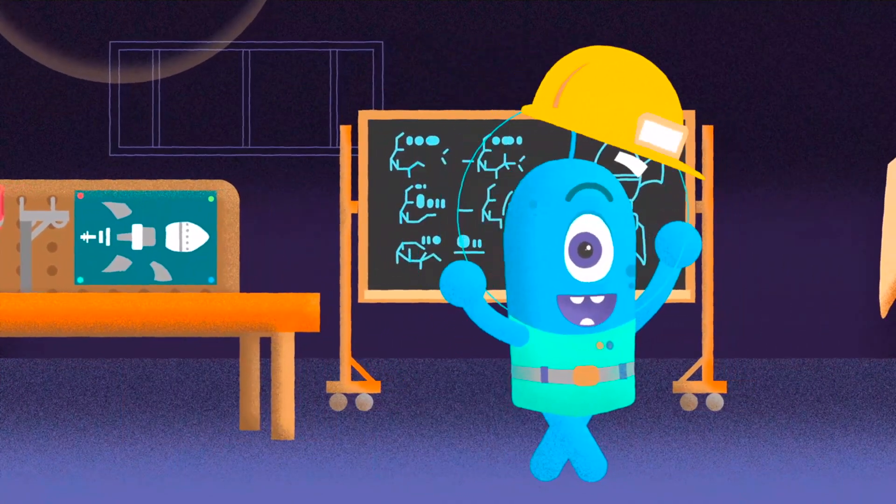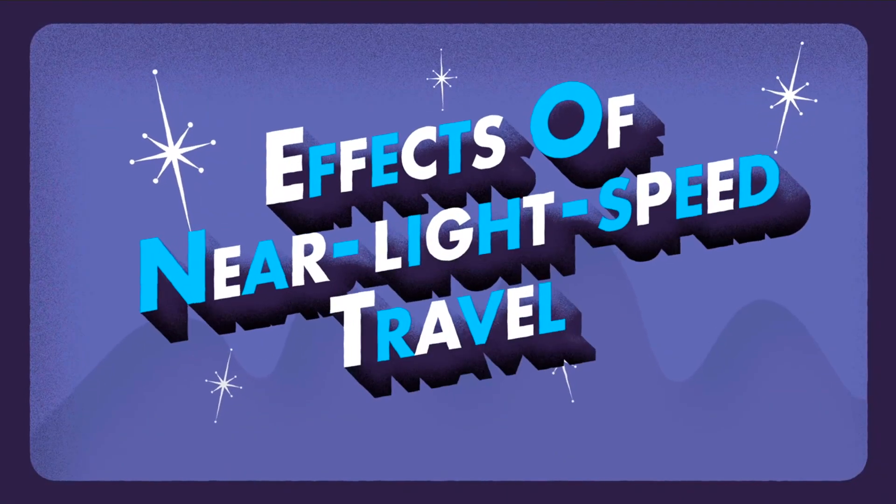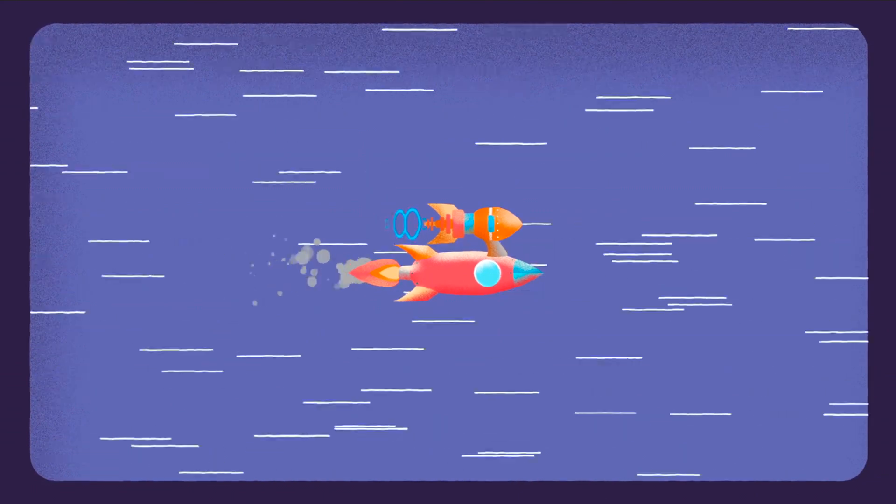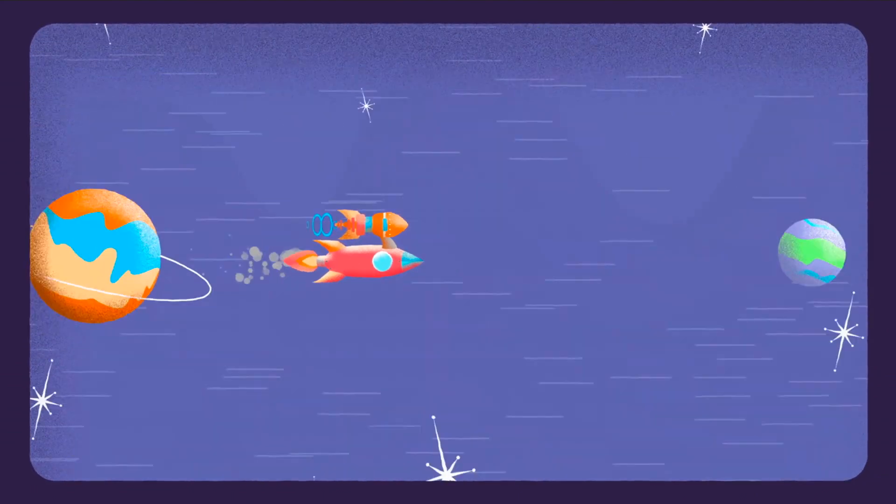Before you fly off all willy-nilly, however, there are some important things you should probably know about approaching the speed of light. First, a lot of weird things can happen, like time and space getting all bent out of shape.